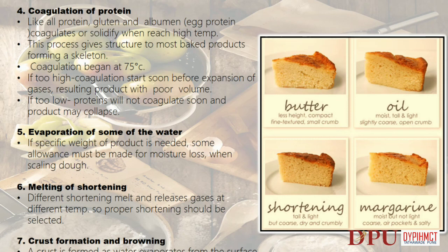Evaporation of some of the water: if a specific weight of product is needed, some allowance must be made for moisture loss when scaling dough. Melting of shortening: different shortenings melt and release gases at different temperatures, so proper shortening should be selected. Crust formation and browning: a crust is formed as water evaporates from the surface and leaves it dry. Browning occurs when sugar caramelizes and starches and sugar undergo certain chemical changes caused by heat — this is known as the Maillard reaction, which contributes to flavor and color.